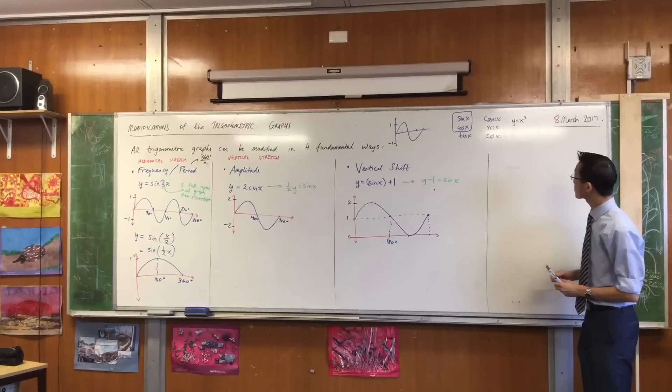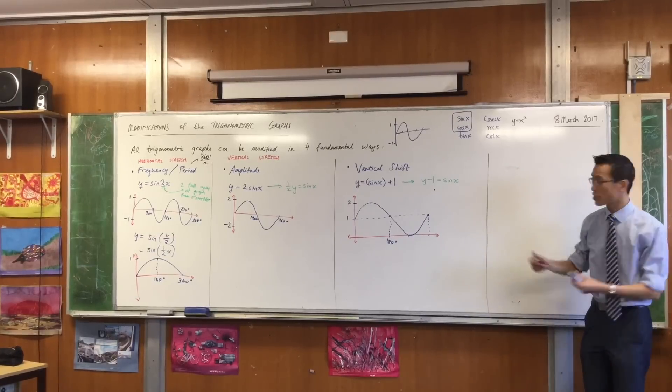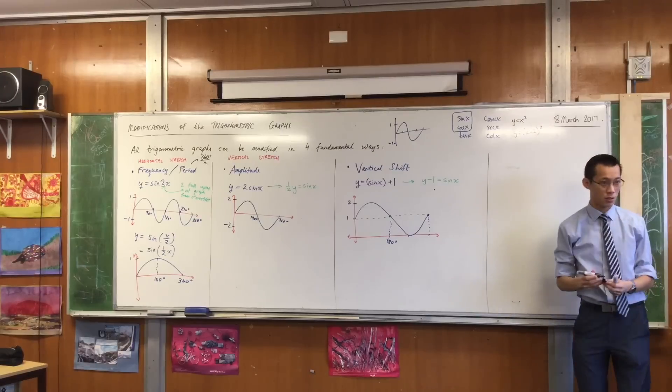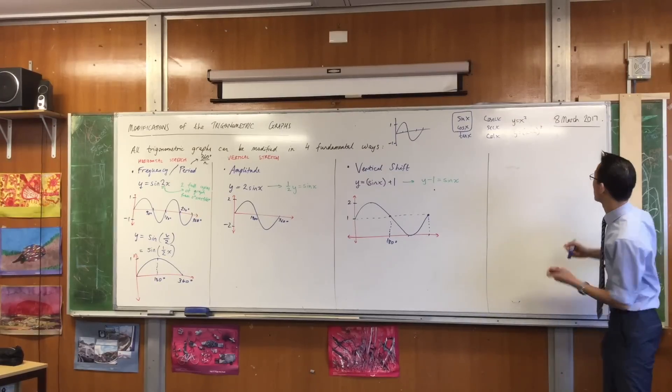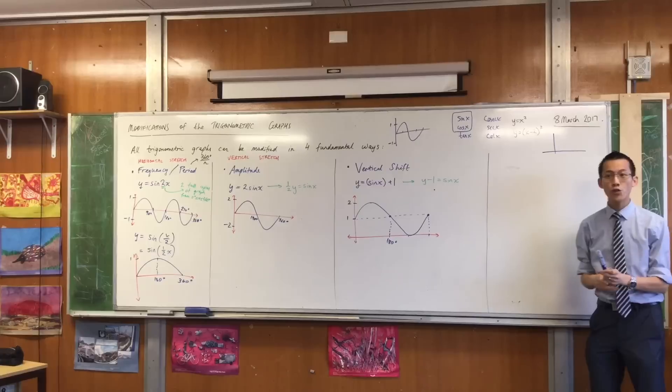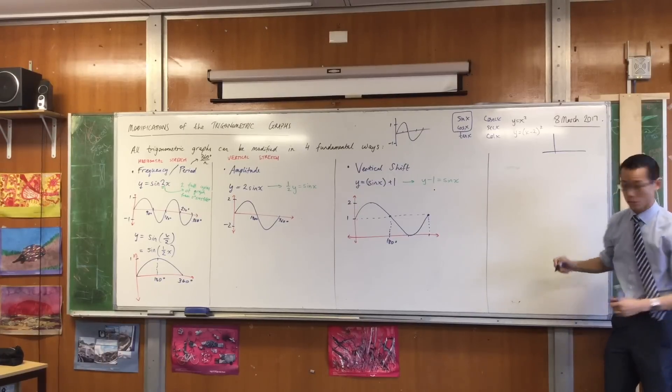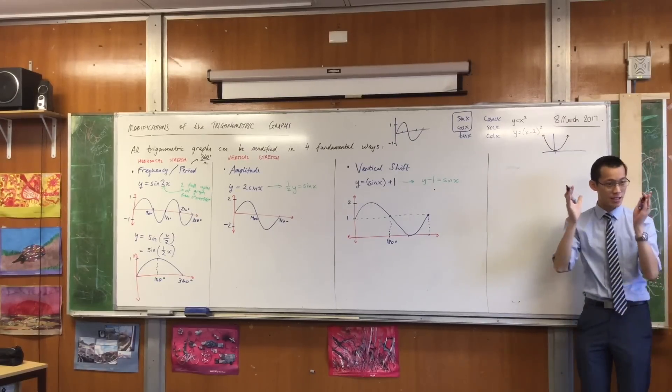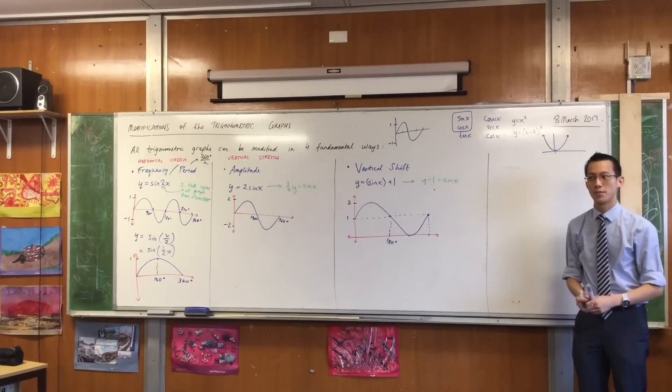ask you to draw y equals x squared, and then I ask you to, next to it, draw y equals x minus 2 squared, okay? Draw me a little set of axes up here. If you draw a regular y equals x squared, we know what this looks like. We can draw this in our sleep. There's a parabola. It has its vertex at the origin, just like you're nice and familiar.